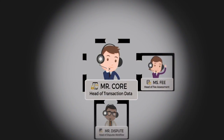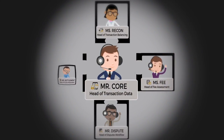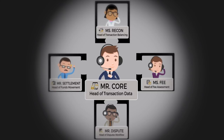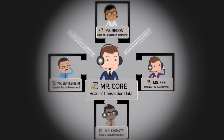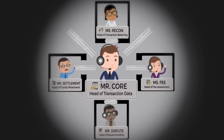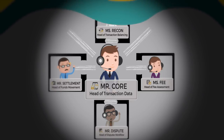At this point, Mr. Core automatically receives the transaction data from the bank's authorization system along with data from the credit card network. Mr. Core then links the data together and instantly makes it available to all the other back-office employees at Bank A.